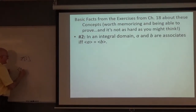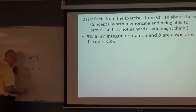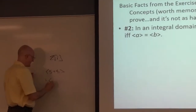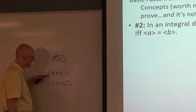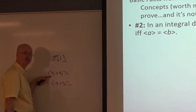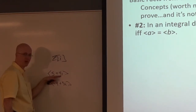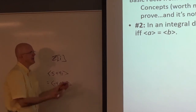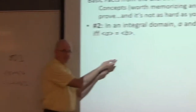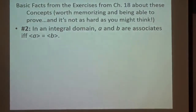In the Gaussian integers, the principal ideal generated by 5 + 4i would be the same as the principal ideal generated by negative 4 + 5i. Why? Because to get from one number to the other, you multiply by i, which is a unit. i times 4i is 4i² = negative 4, and i times 5 is 5. So it makes good sense in the integers and applies more broadly.